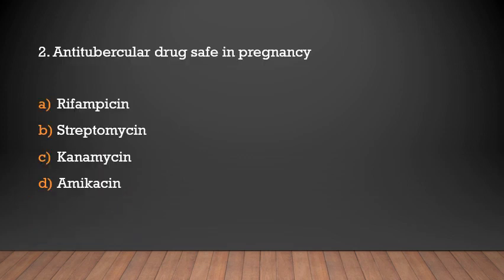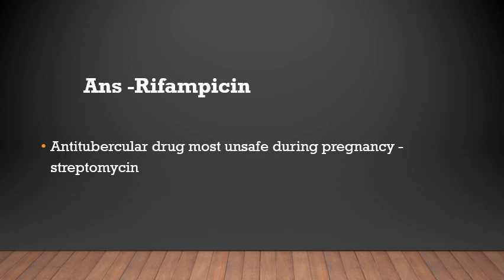Which anti-tubercular drug is safe in pregnancy? Rifamycin, Streptomycin, Kanamycin, or Amikacin? Answer: Rifamycin. Rifamycin is the anti-tubercular drug that is safe during pregnancy. The most unsafe drug during pregnancy is Streptomycin.